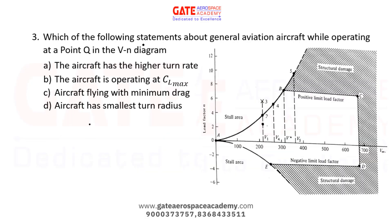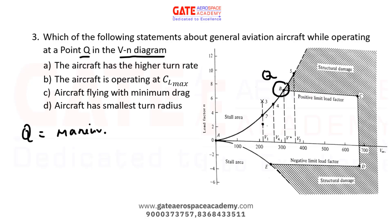Next question: which of the following statements about a general aviation aircraft operating at point Q in the V-n diagram are correct? Based on information confirmed from students, the question is based on point B in the V-n diagram, referred to as point Q in the paper. Students who studied the V-n diagram can easily solve this. Point Q is called the maneuver point, and the velocity corresponding to it is called the corner velocity.